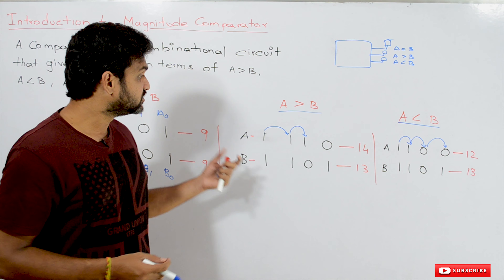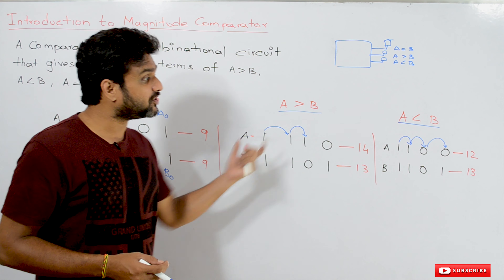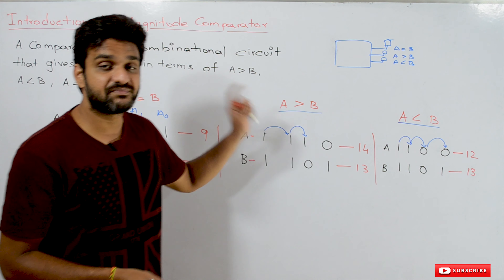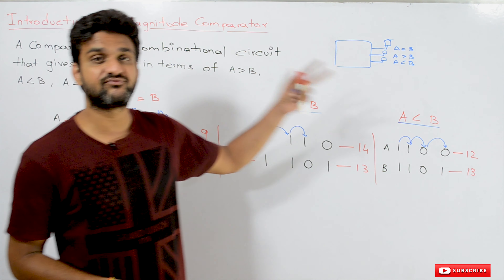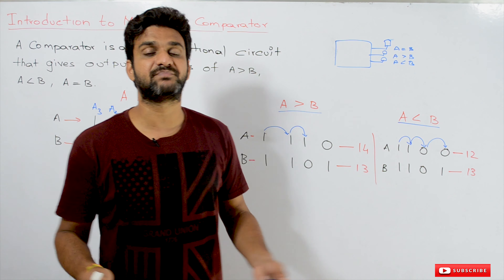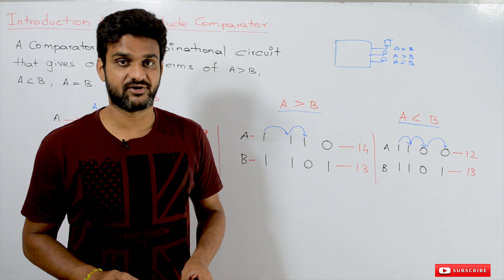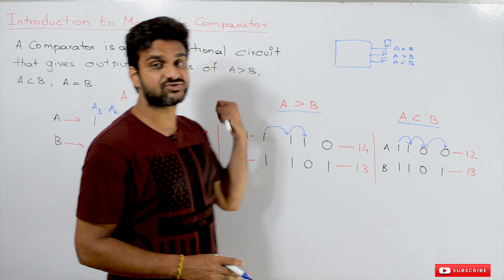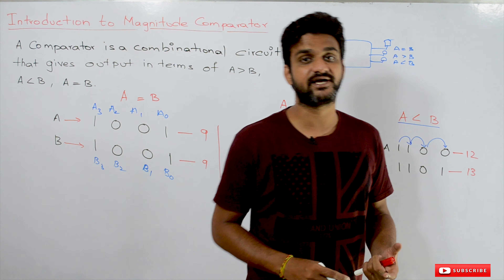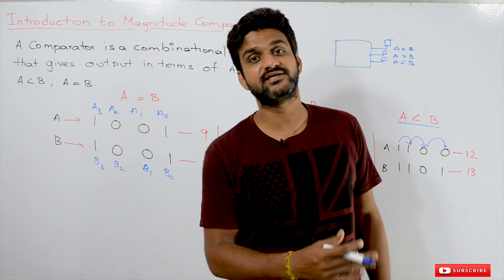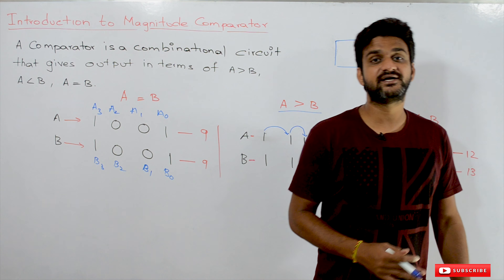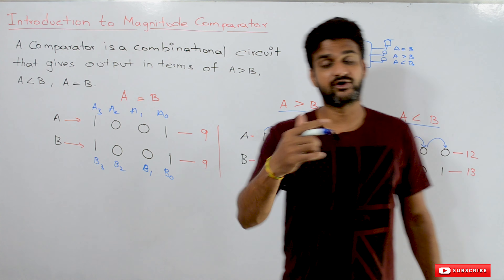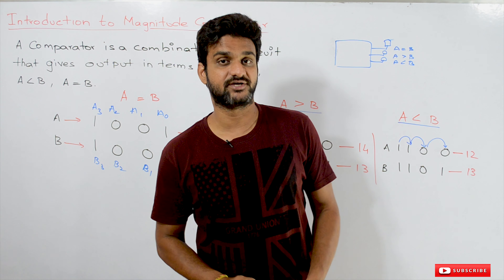So this is how, based upon this logic, the combinational circuit for a one-bit comparator, two-bit comparator, four-bit comparator, or n-bit comparator can be drawn. Hope you got the clarity on this concept. This logic is very important to understand because in designing the circuit for comparators, the combinational circuits will be constructed based upon this logic.